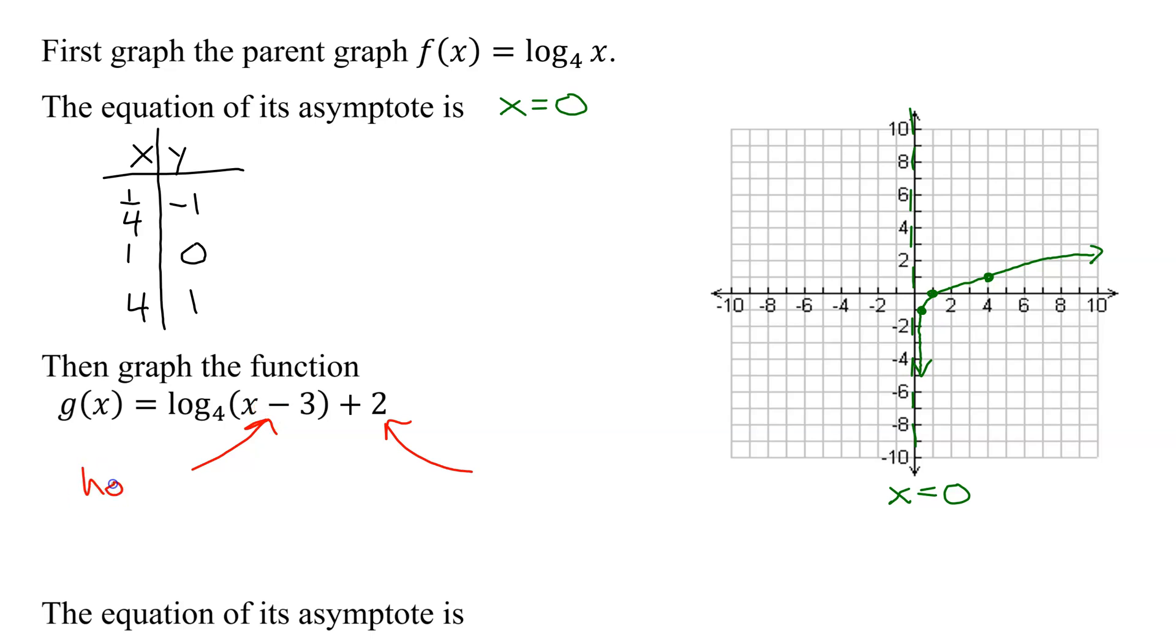Since it's inside the function, it's going to be a horizontal effect. Adding and subtracting shifts the graph left and right, and inside effects, horizontal effects are kind of opposite of what you think. Minus 3 is going to shift it to the right 3 units. Plus 2 is outside. It's a vertical effect, and vertical is logical. Plus 2 is going to shift it up 2 units.